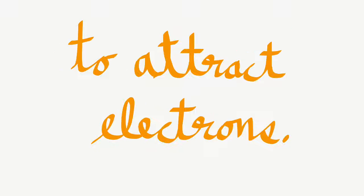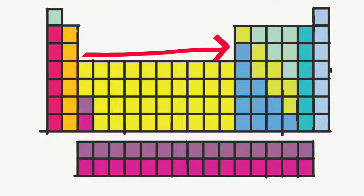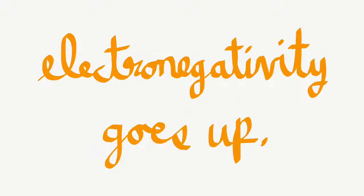Electronegativity is an element's ability to attract electrons. When you go across a row in the periodic table, called a period, electronegativity goes up.